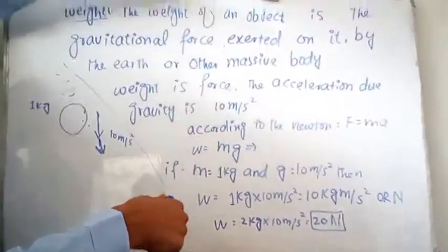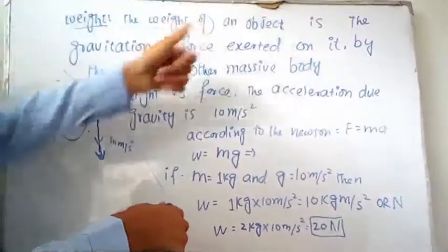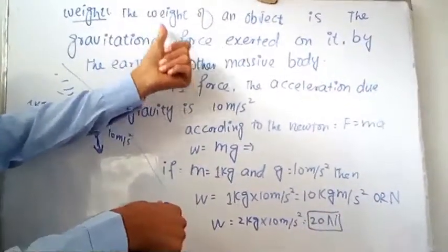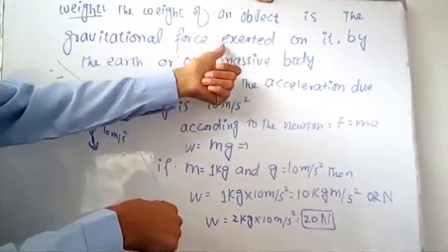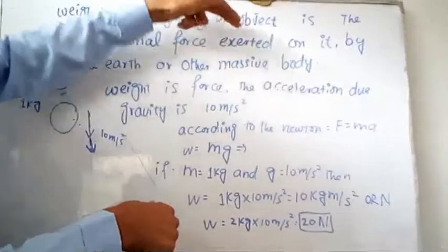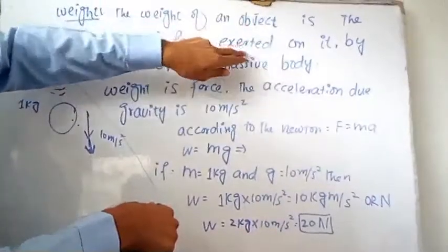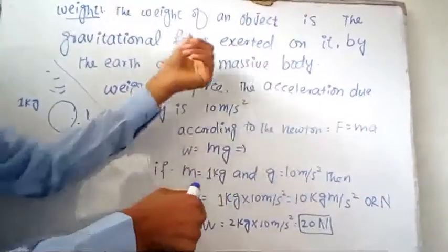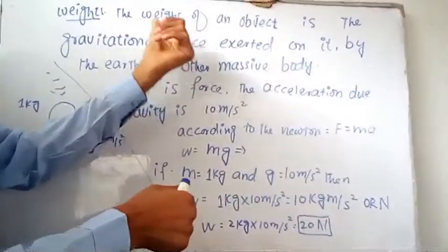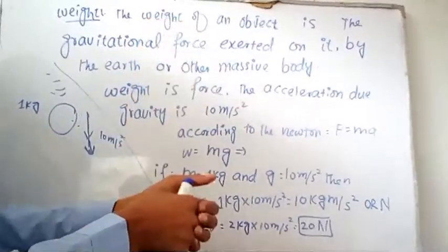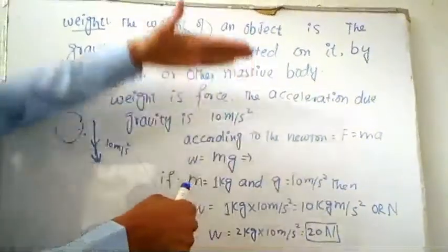It means that the weight of an object will be the measure of gravitational force. It means that how much gravitational force is exerted on the body will be the weight of that object.